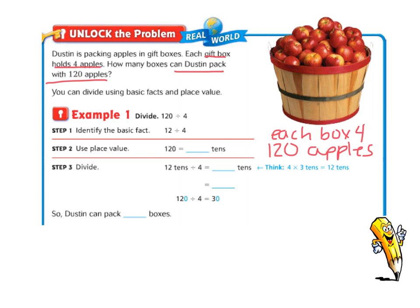In the problem 120 divided by 4, there's the basic fact of 12 divided by 4. Since 120 is the same as 12 tens, I could divide 12 tens by 4 to get 3 tens, and 3 tens is 30. So in this case, Dustin can pack 30 boxes. What I'd like you to copy is the example here for the work so that you can see it on your notes later as we solve more. Pause the video and then replay when you're ready to move on.